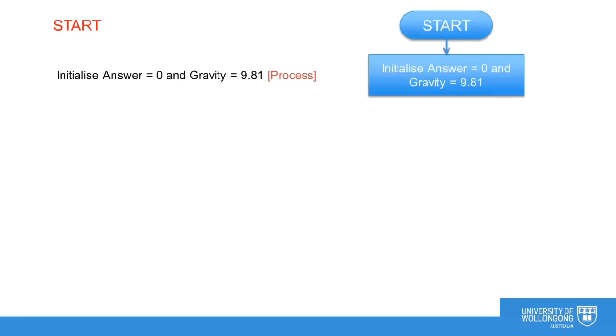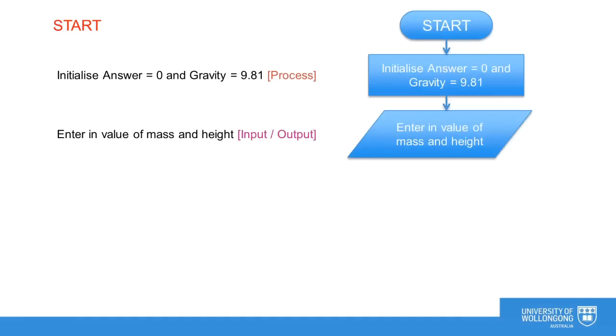We will now go through and transfer our pseudocode into the flowchart format. This gives us a good visual representation of the process. Each line of our pseudocode is translated into the correct flowchart symbol. Input output processes are shown as parallelograms. Processes are shown as rectangles and a diamond is used for making a decision. Arrow connectors are used to show the flow from the start to the end of the algorithm.